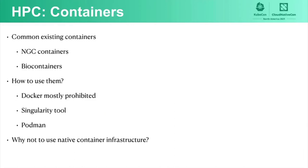So far I have been talking only about HPC, but as we are at KubeCon, I will move to containers now. The majority of you have already heard about NGC containers or biocontainers that are meant to be used in HPC. But how do we use them in HPC? In a shared infrastructure, Docker is mostly prohibited due to security issues, so we can use Singularity — but this tool has problems of its own. We also have another option, Podman. But if we think about it, why don't we use native container infrastructure?